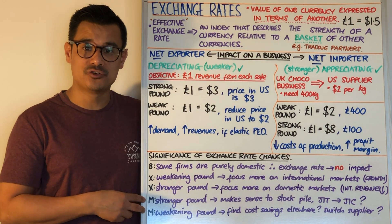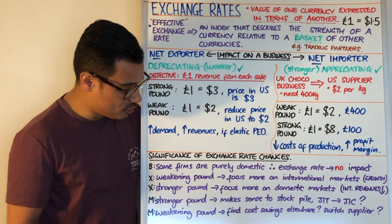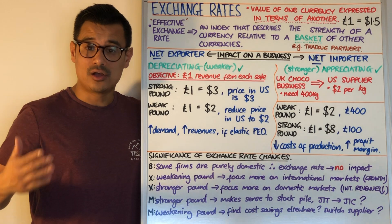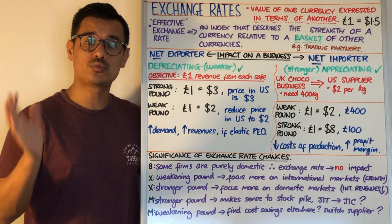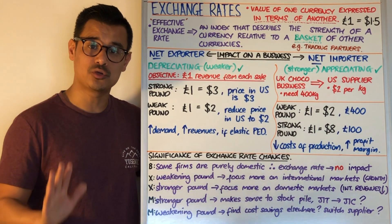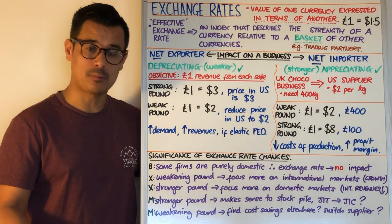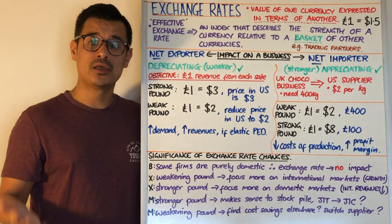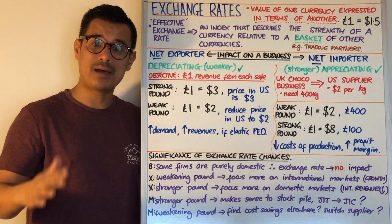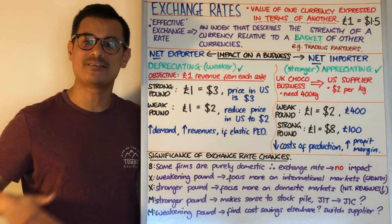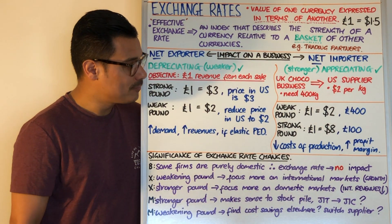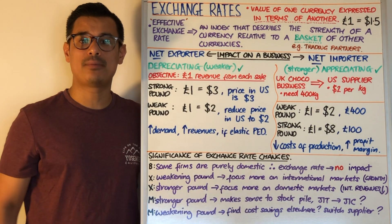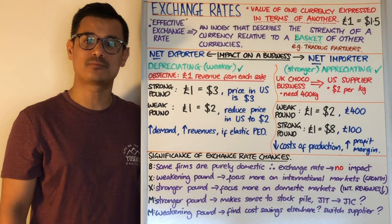Thinking about imports: if you're an importer and you get a stronger pound, it might make sense to stockpile. You might switch away from just-in-time towards just-in-case, to make the most of a very strong exchange rate. If you're an importer seeing a weakening pound, that's a problem because your cost of production will likely increase. You might look to switch to a domestic supplier to eliminate the exchange rate risk, or reduce marketing costs, admin costs, or other operating expenses.